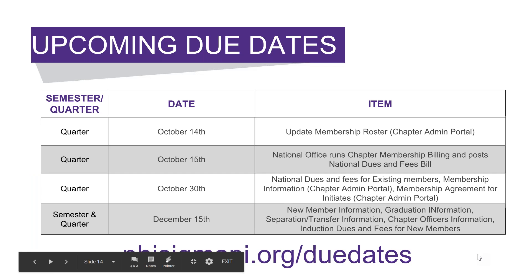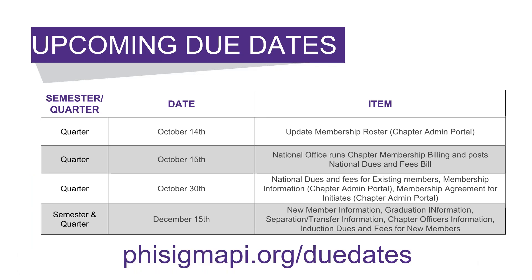Here are upcoming due dates for our members. All the due dates can be found at PhiSigmaPi.org/duedates. The next three are for quarter schools, and then December 15th is for semester and quarter schools.